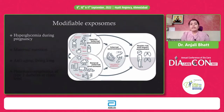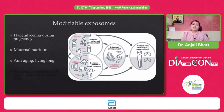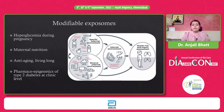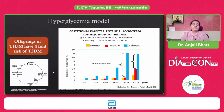Maternal nutrition has a very strong impact on the baby's birth weight, and birth weight has a very strong impact on the future health of the child. Anti-aging — living long — is another area where people are looking at changing epigenomic expressions and improving longevity as well as quality of life. Coming to the clinic level: pharmaco-epigenetics of type 2 diabetes. The hyperglycemia model is a very well-known model.